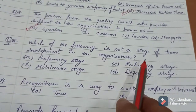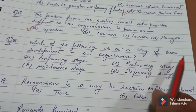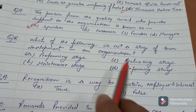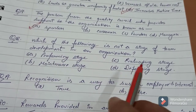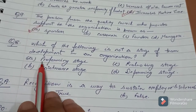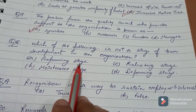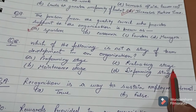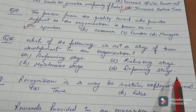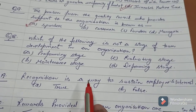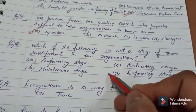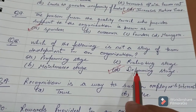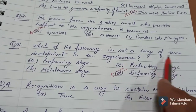Question number 18: Which of the following is not a stage of team development in an organization? Options: performing stage, maintenance stage, evaluating stage, or deforming stage? The answer is D — deforming stage — because deforming can never be a part of team development.